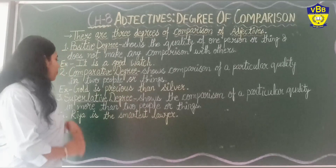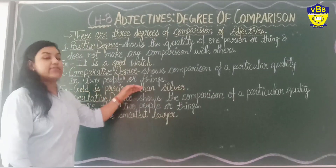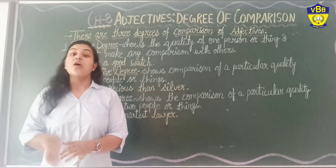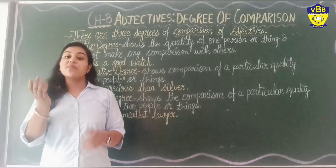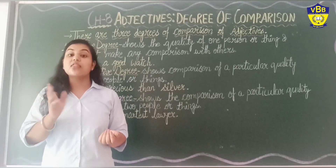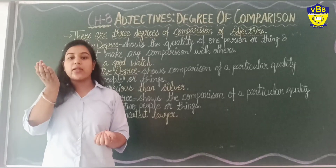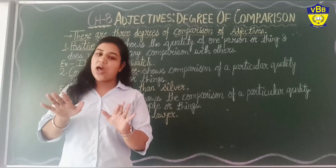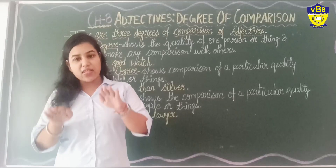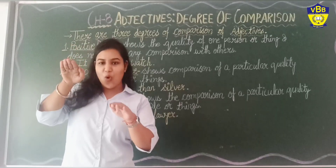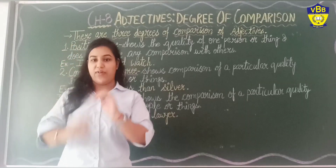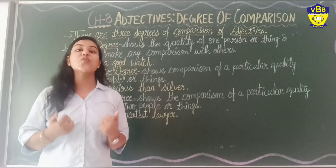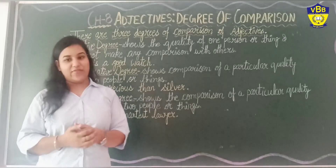For example: "Gold is more precious than silver." Here we are saying that gold is more precious than silver, meaning we are making a comparison between both things — gold and silver. So for comparison between two things, we have to use Comparative Degree.